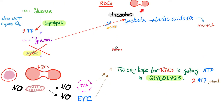Question: does your red blood cell have a mitochondria? No. Do you think the red blood cell can perform the TCA cycle or the electron transport chain? No. Therefore, the only hope for your red blood cells to get some energy is through glycolysis, which does not require oxygen.